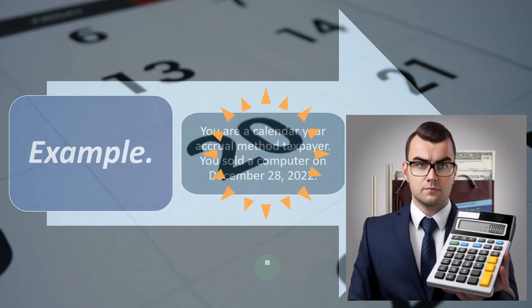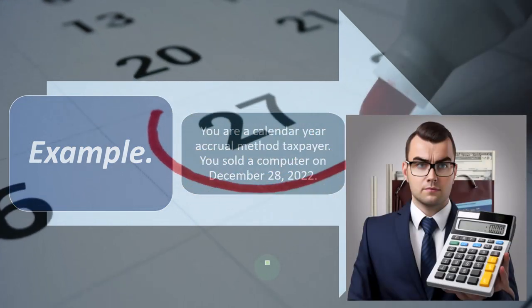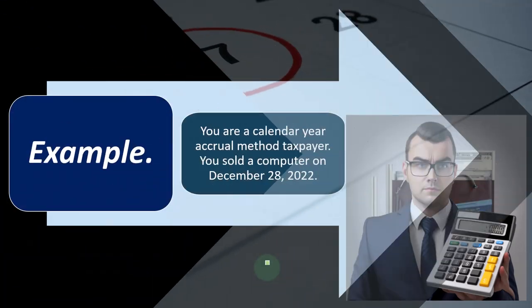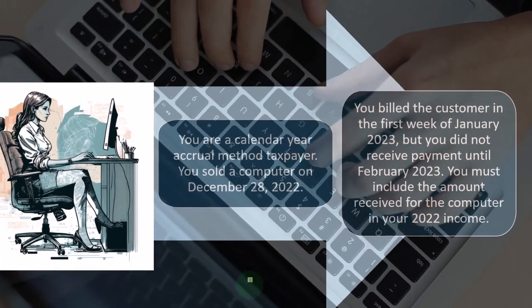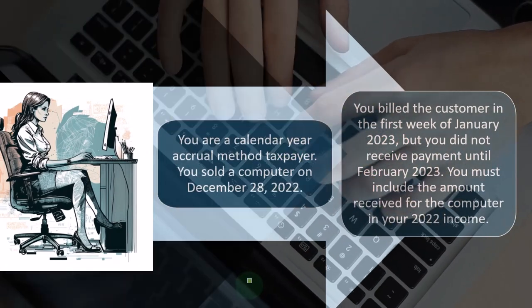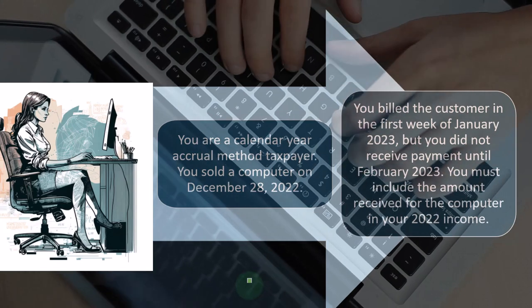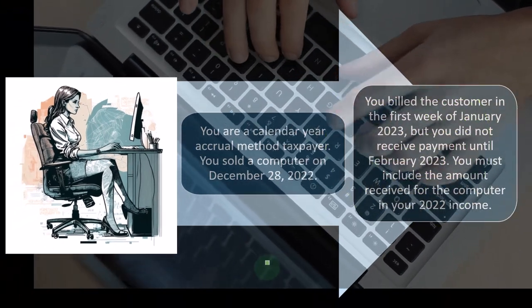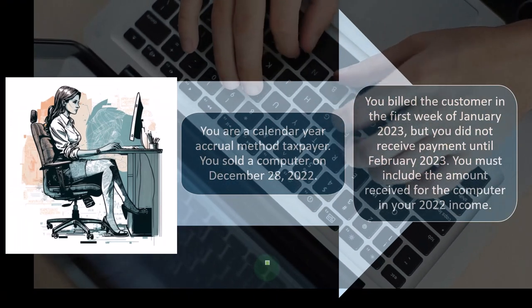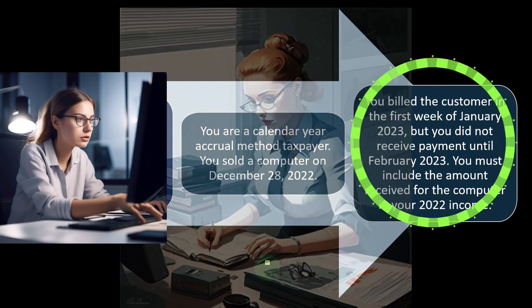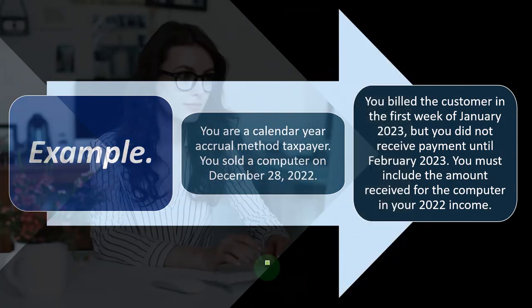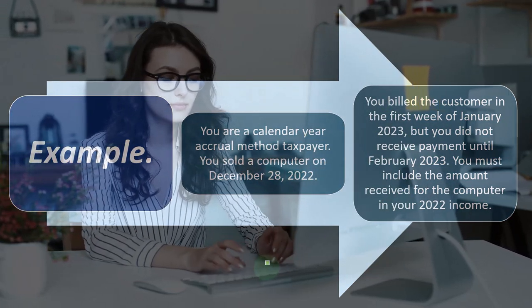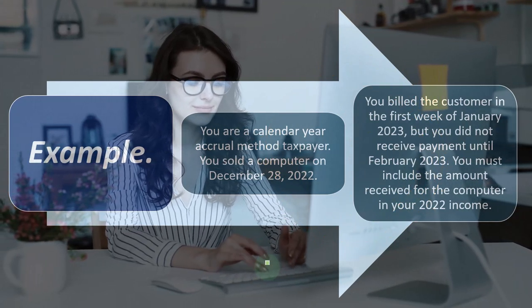Example: you are a calendar year accrual method taxpayer — January through December. You sold a computer on December 28th, 2022. You billed the customer in the first week of January 2023, but did not receive payment until February 2023. You must include the amount received for the computer in year 2022, because that's when you did the work — the inventory left you and came into the possession of the recipient. That's when you completed the job.